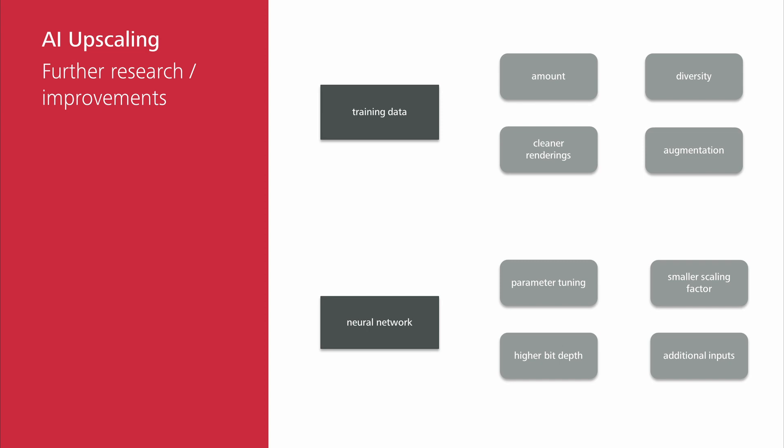In addition to enhancing the training data, there are various changes to the neural network that could lead to improved performance. For example, reducing the scaling factor from the quite extreme factor of 4 to a more reasonable factor of 2 could help with achieving usable results, though at the cost of fewer render time savings. Another consideration is the bit depth and color space of the input and output data. The original architecture is limited to 8-bit sRGB input and output; we changed this to 16-bit, but working with fully linear 32-bit images would be desirable. Lastly, adding additionally available input data — such as motion vectors or depth maps — could help the network in analyzing the image and creating better results.